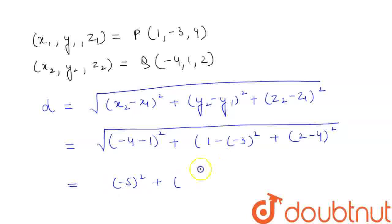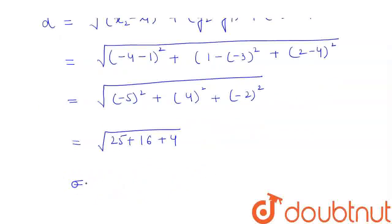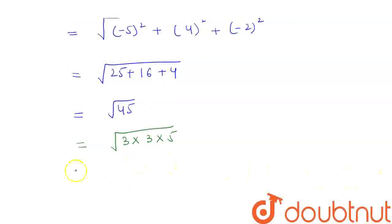This will become the square root of minus 5 whole square plus 4 whole square plus minus 2 whole square, which is the square root of 25 plus 16 plus 4, equal to the square root of 45. We can factorize this and write it as 3 into 3 into 5 under root, which will come out to be equal to 3 root 5 units. So, the distance between the two points P and Q is 3 root 5, and this is our required answer.